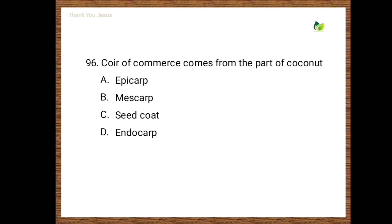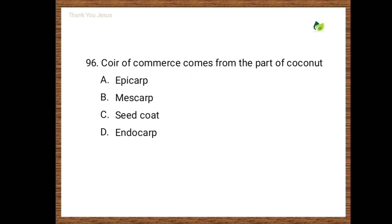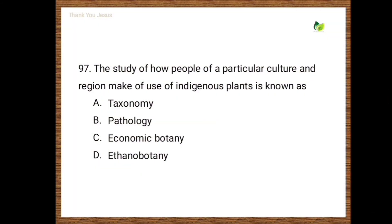Next question: Coir of commerce comes from which part of coconut? Options are epicarp, mesocarp, seed coat, endocarp. The correct answer is mesocarp.